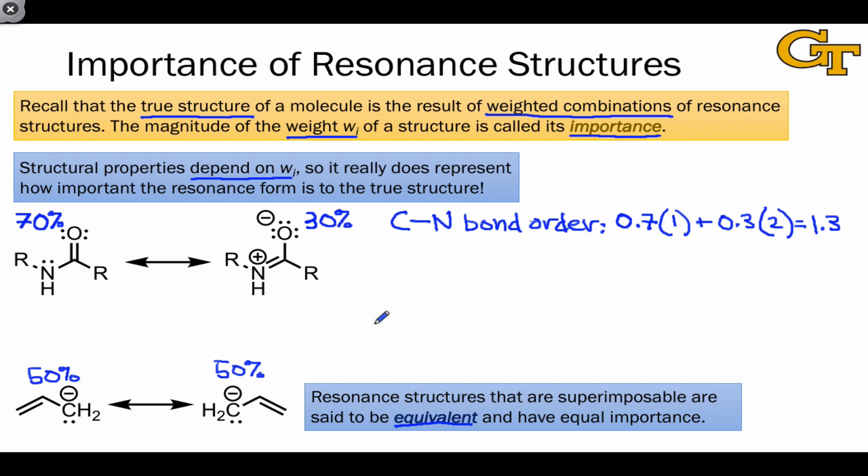Because the two structures are identical in a superimposability sense, one can't have greater importance than the other. In this particular case, the fact that the two resonance forms are equivalent tells us useful information, specifically that the molecule is characterized by equal partial charges at the terminal carbons, that is, at the outer carbons, and carbon-carbon bond lengths, since the bond orders of both CC bonds must be equal to 1.5.